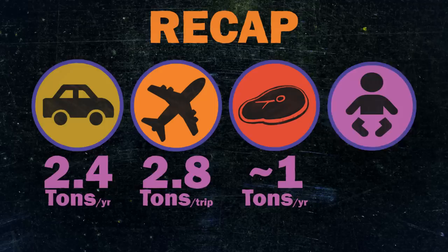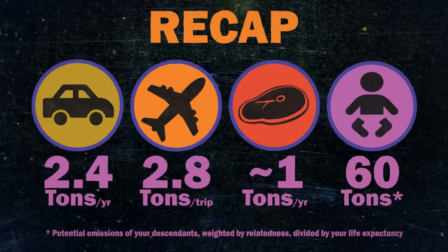If you choose to have one fewer child, that saves on average 60 tons of carbon dioxide per year. This is far and away the most effective thing you or I or anyone in the developed world could do to reduce our emissions.